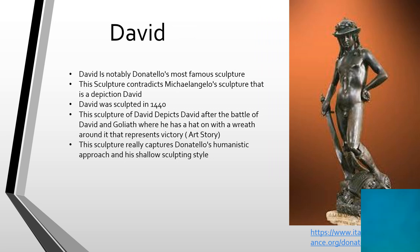Next is David, notably Donatello's most famous sculpture. This sculpture contradicts Michelangelo's sculpture, which is also a depiction of David. David was sculpted in 1440. This sculpture of David depicts David after the battle of David and Goliath, where he has a hat on with a wreath around it, which represents victory. This sculpture really captures Donatello's humanistic approach and his shallow sculpting style — this one isn't very defined, unlike Michelangelo's, where the body is very defined — but it's still going for a humanistic approach.